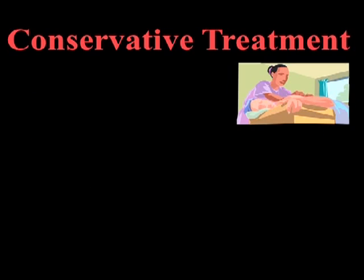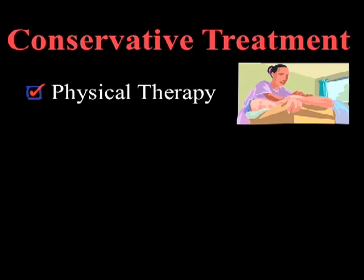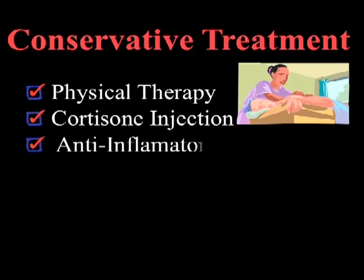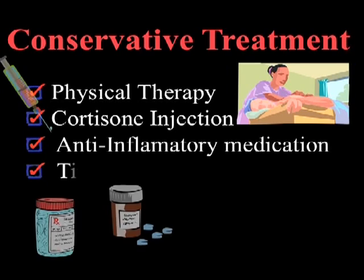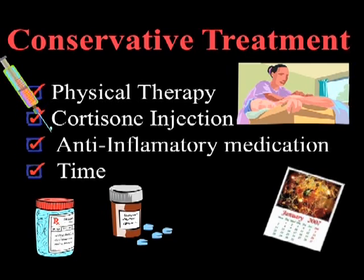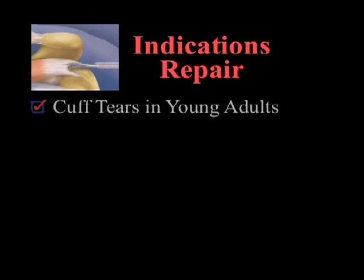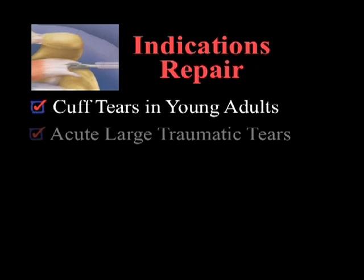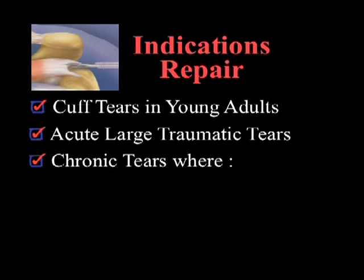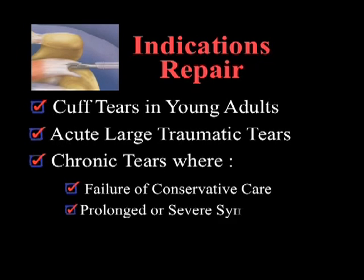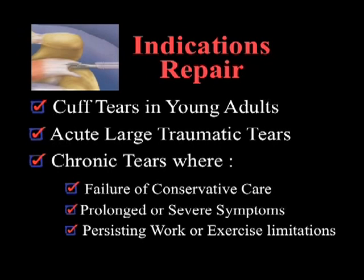Conservative care includes physical therapy, a cortisone injection, anti-inflammatory medication, and importantly, time. The indications for repair include: 1. Cuff tears in young individuals. 2. Acute large cuff tears with significant weakness. 3. Chronic tears where there has been a failure of conservative care, prolonged or severe symptoms, persisting work or exercise limitations, and continued pain.